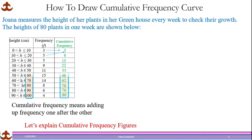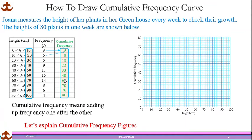Now let's draw the Cumulative Frequency Curve. Once you've done your cumulative frequency table, focus on only the last numbers of each class interval and the corresponding cumulative frequency. Plot them as coordinates — the height values are your x-coordinate and the cumulative frequency is your y-coordinate. Plot each point, for example 10 and 3, then 10 and 8, and so on. Because the first number is 0, start from 0 and join all points with a smooth curve.